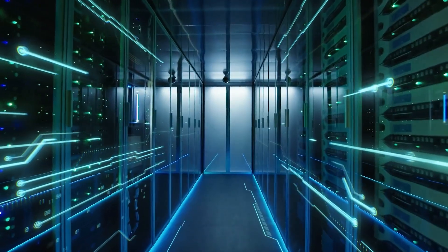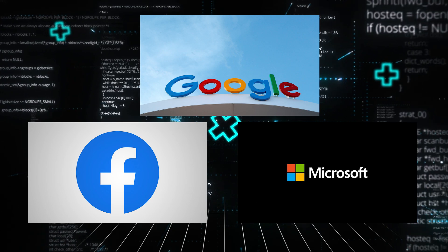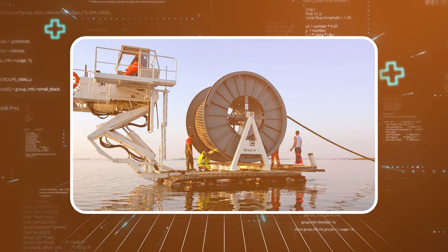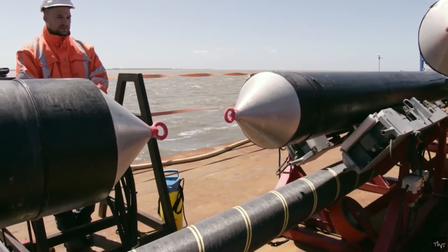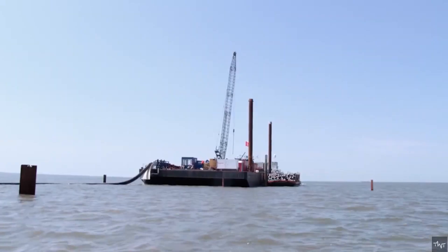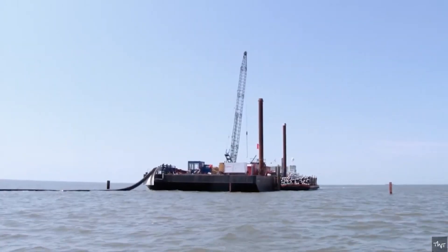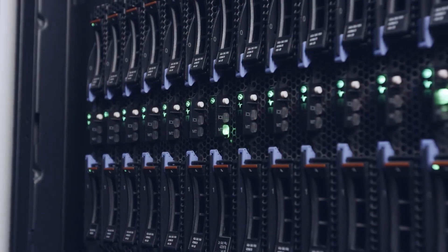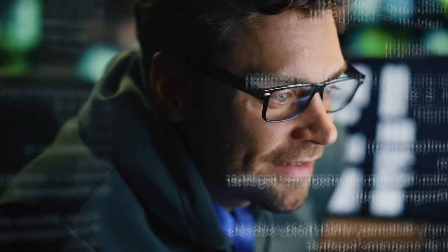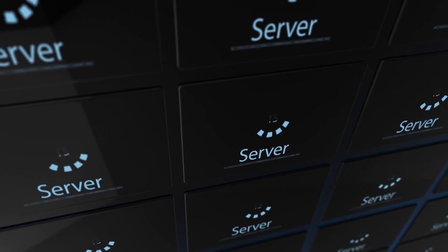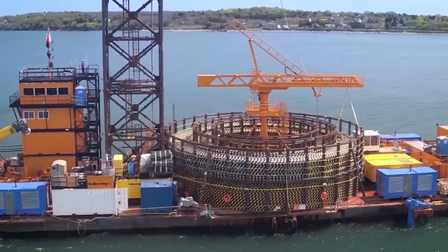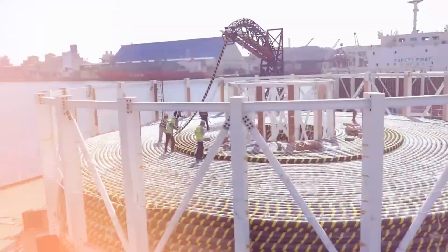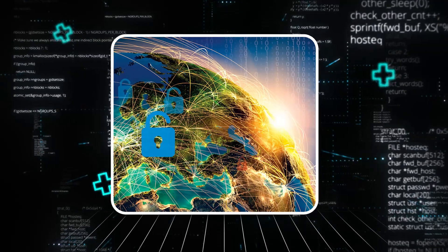In addition to redundancy, major tech companies like Google, Facebook, and Microsoft have invested in building their own private submarine cables. These cables allow the companies to control their data transmission routes, ensuring faster and more reliable service for their users. While most of us use the internet every day without thinking about how it works, understanding the infrastructure that makes it all possible is crucial in today's digital age. By learning more about submarine cables, we can appreciate the incredible feats of engineering and collaboration that keep the world connected.